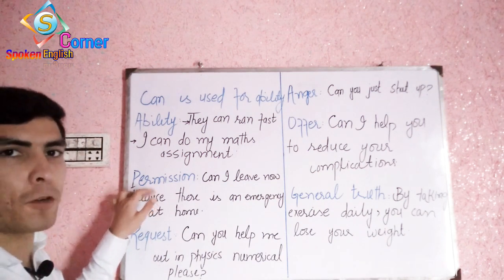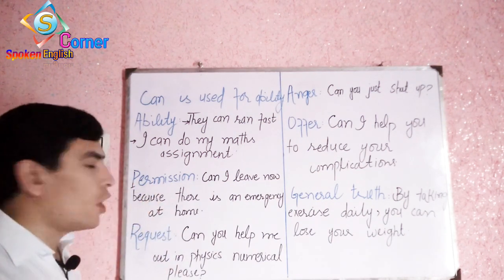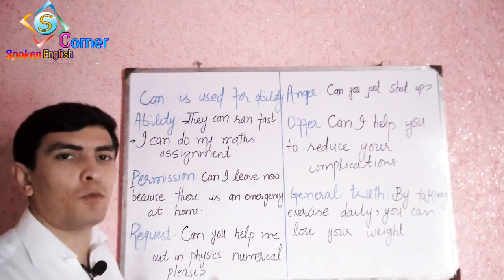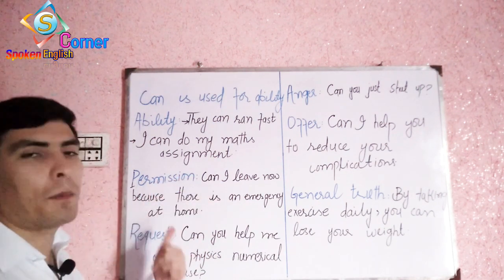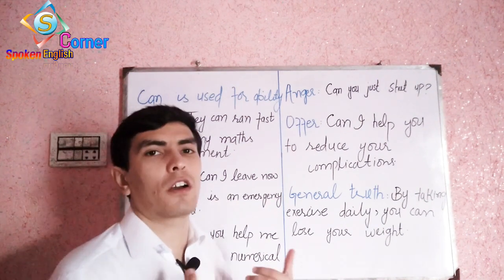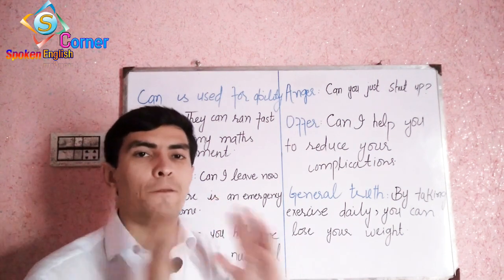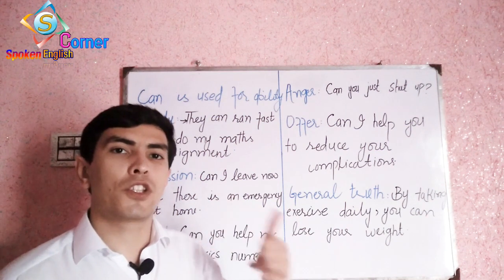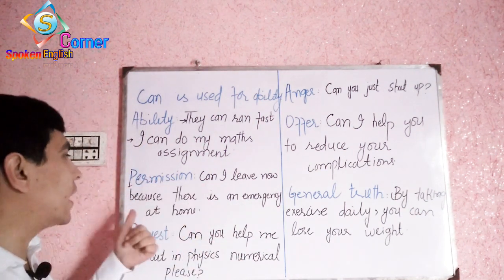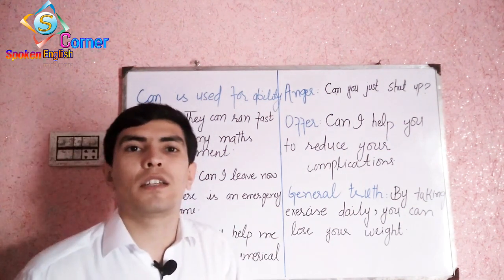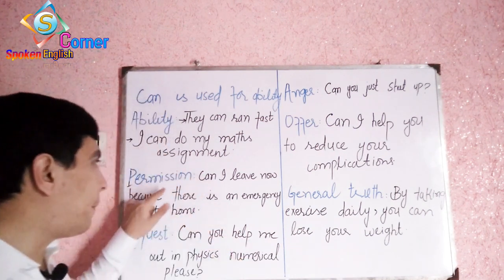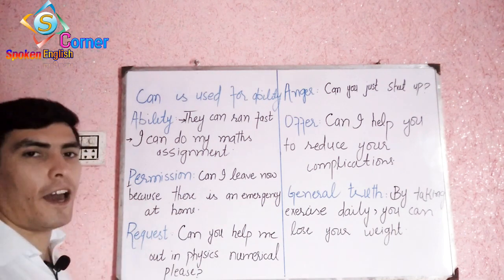The next use is permission. With the help of 'can' you can take permission from someone. For example: 'Can I leave now because there is an emergency at home?' The situation is like this: a person is working at the office and receives a call about an emergency at home, so he needs to leave. He asks his boss using this statement, and the boss replies: 'You can go.' That's all about permission.